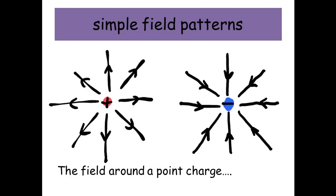We're going to look at a few simple field patterns. Around point charges—a positive point charge—the field lines all go outwards. And around a negative charge, the field lines all go inwards.